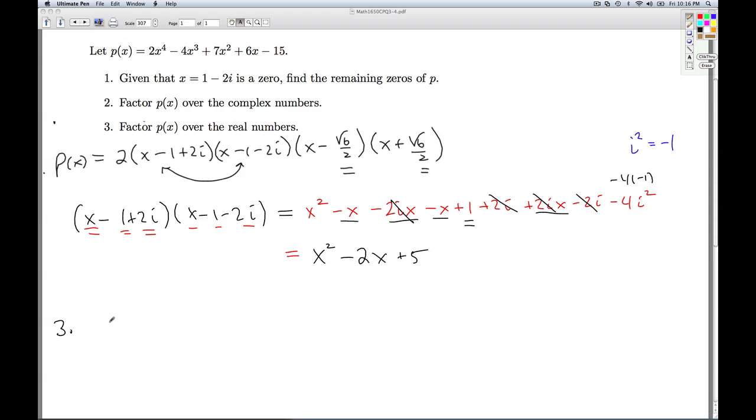So for number 3, my final answer would be P(x) = 2 times this quadratic takes the place of these two linear factors: (x² - 2x + 5)(x - √6/2)(x + √6/2). So this would be as far as you could break down P(x) using real numbers. That'll do it for checkpoint quiz 3.4.